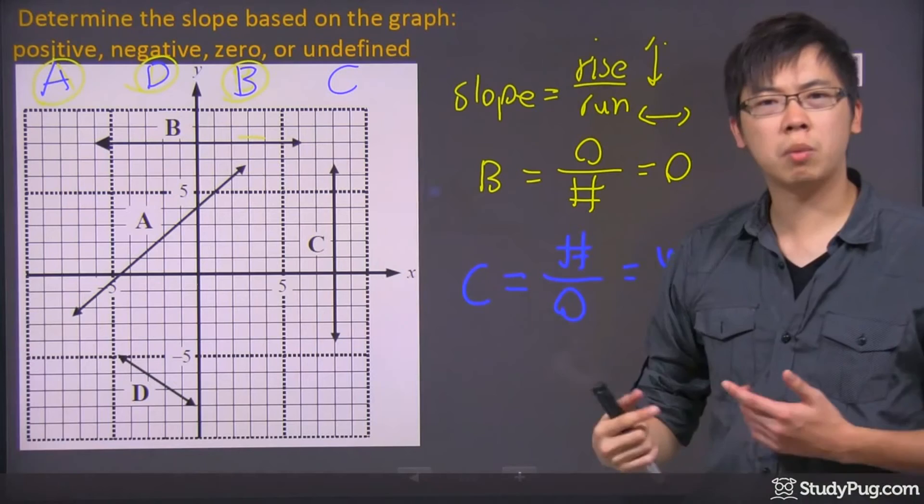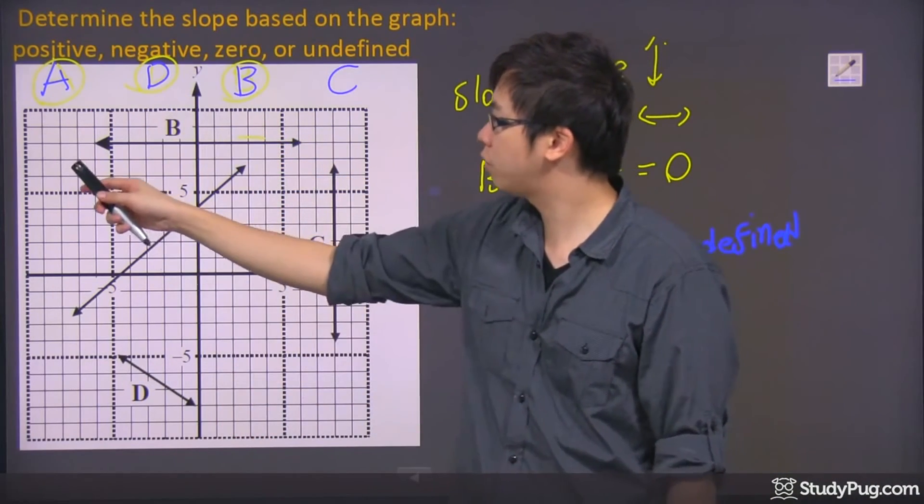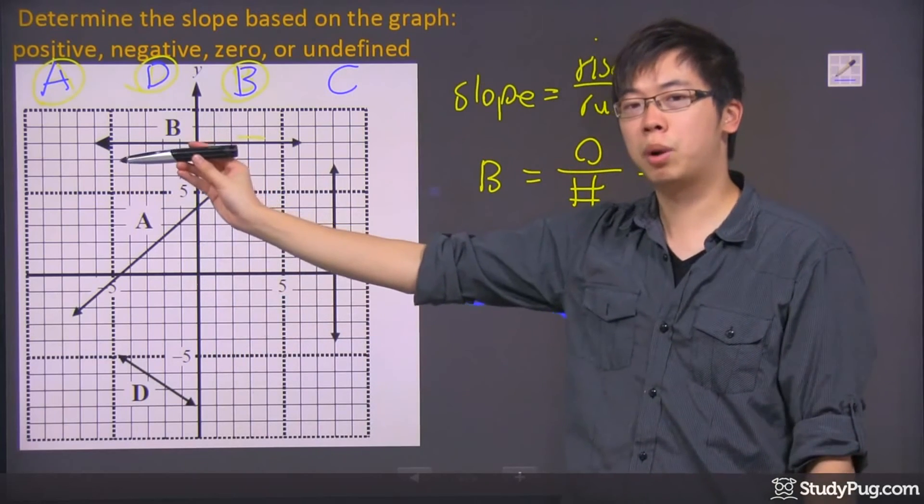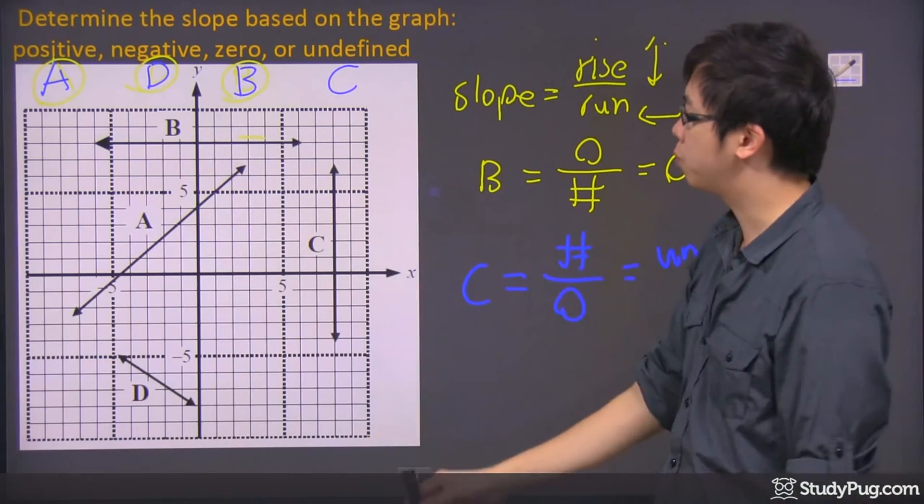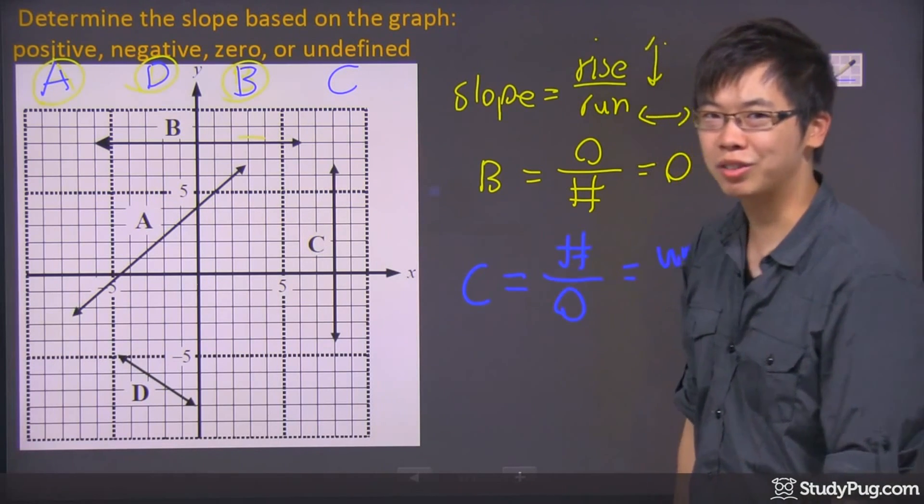So once again, you might want to remember a couple tricks. If it's going to the right, top, positive. Going to the left, it's negative. If it's perfectly flat, we call it zero. If it's perfectly vertical, it's undefined in terms of slopes. Thanks for watching.